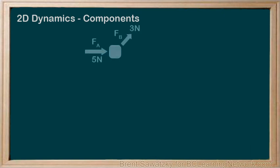Same problem, but this time, let's use the component method. Using components, we still start with a good free body diagram. FA equals 5 newtons to the right and FB equals 3 newtons up and right.